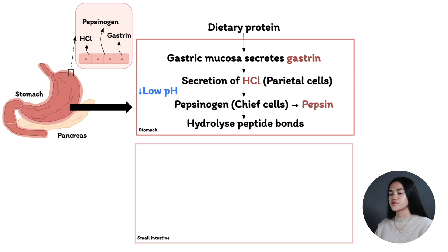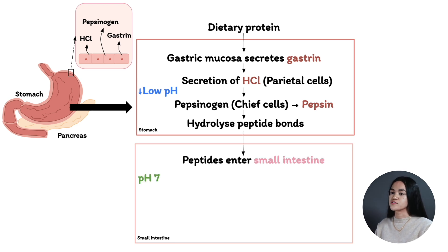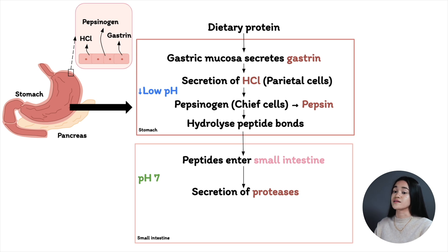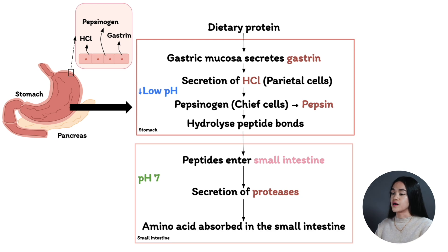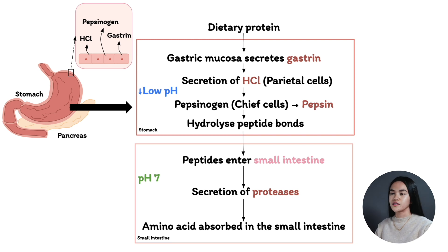Another thing that happens because of the lower pH is we have an inactive precursor called pepsinogen, which is going to be converted to pepsin. Pepsin will then hydrolyze the proteins, breaking them down to smaller peptides. The proteins will then go to the small intestine, where acidity will be neutralized by secreting bicarbonate from the pancreas. The pancreas will also secrete proteases, which will break down the peptides into amino acids. The amino acids will then be absorbed by the epithelial cells lining the small intestine, enter blood capillaries, and travel to the liver, where most amino acids are metabolized.